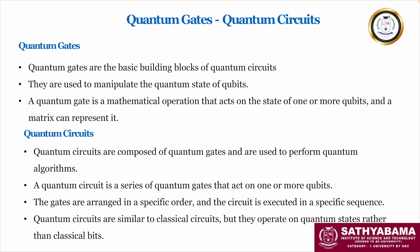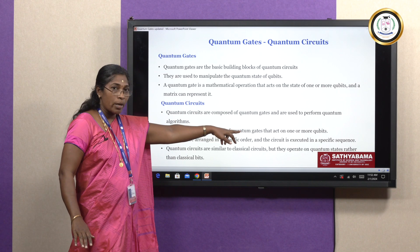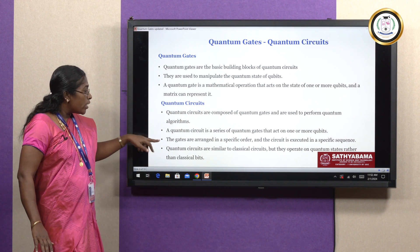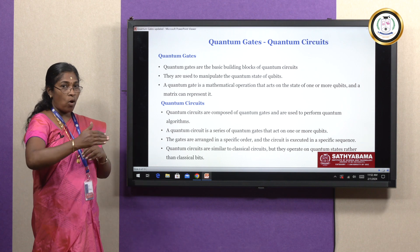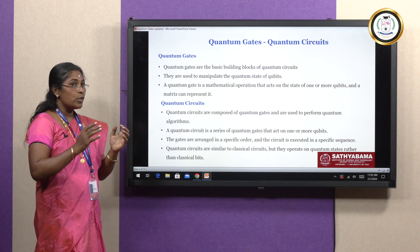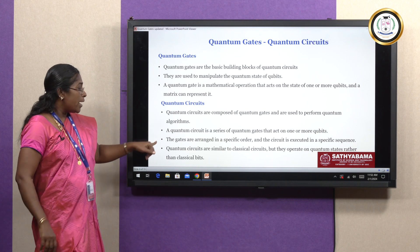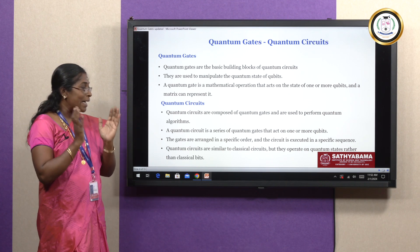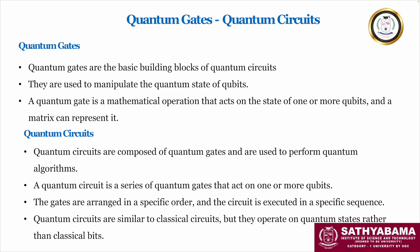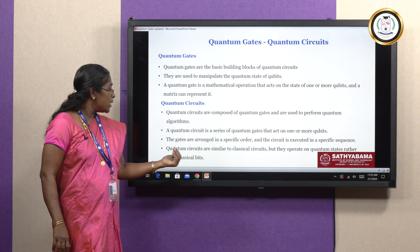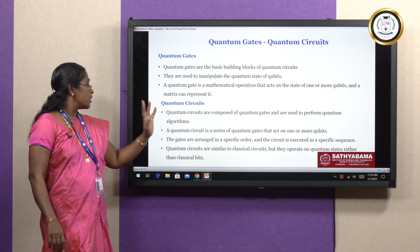A quantum circuit is a series of quantum gates that acts on quantum states, and the quantum gates are arranged in a specific manner in order to solve certain problems. Quantum circuits are similar to classical circuits, but they operate on quantum states rather than classical bits. Classical bits operate in classical circuits and quantum bits operate on quantum circuits.